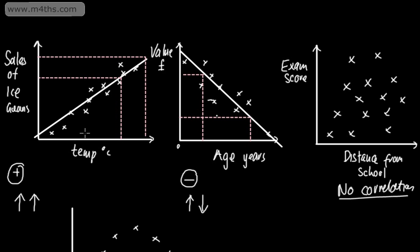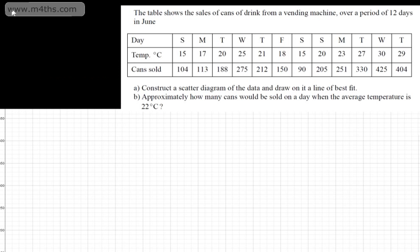Sometimes if you take your studies further, you might hear this being called bivariate data. But for now, it's just two different values.